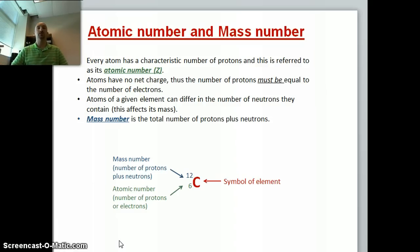We symbolize elements by either one- or two-letter abbreviations, and every atom has a characteristic number of protons, which we can call the atomic number. Since atoms are neutral, the number of protons and electrons must be equal. However, the number of neutrons may vary. We can determine the number of neutrons from the mass number. Note that the mass number is equal to the total number of protons and neutrons. Atoms are represented by symbols from the periodic table of elements, and we usually write the mass number as a superscript, atomic number as a subscript, and the symbol of the element.